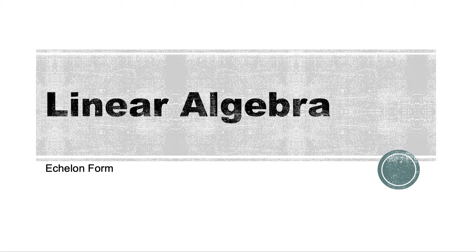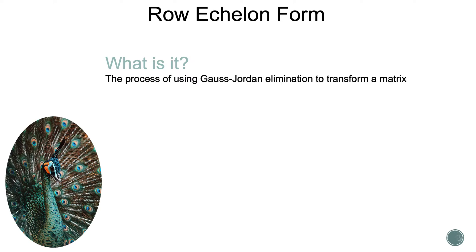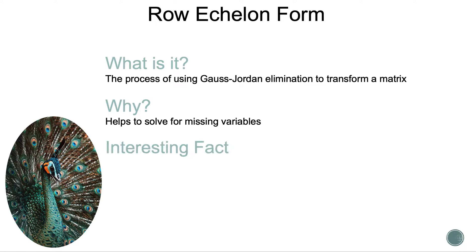Linear Algebra: Echelon Form — what is it? It is the process of using Gauss-Jordan elimination to transform a matrix. This helps to solve for missing variables.